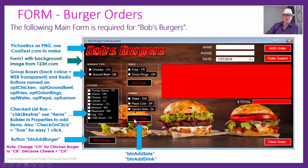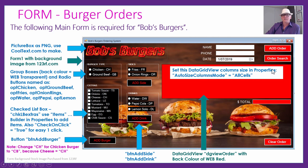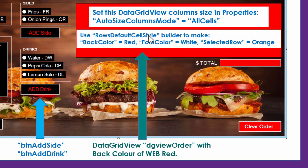We need BTN Add Drink and BTN Add Side — for adding a side order or a drink to the total order. The red rectangle you see is actually the data grid view — we dragged it out onto the form, called it DGViewOrder, and set the back color to web red. Set the Auto Size Columns Mode property to All Cells, otherwise columns will be way wider than needed. Use Rows Default Cell Style with the triple-dot builder to set back color to red, foreground color to white, and selected row color to orange.